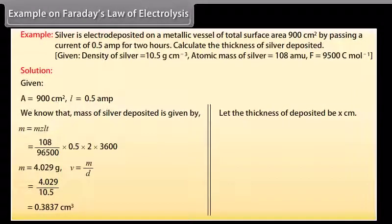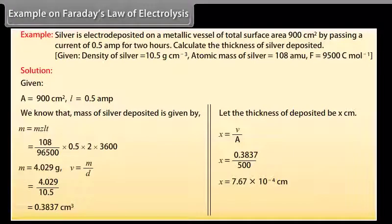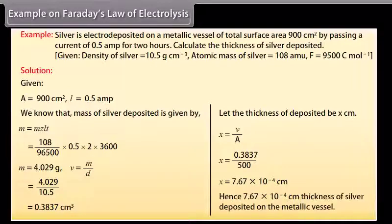Let the thickness of deposited be X cm. We know that X equals V upon A. By putting the values we get X equals 7.67 into 10 raised to the power minus 4 cm. Hence 7.67 into 10 raised to the power minus 4 cm thickness of silver is deposited on the metallic vessel.